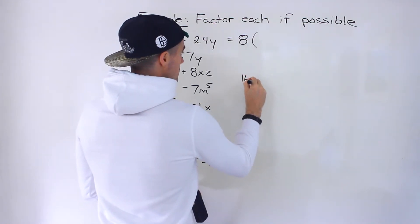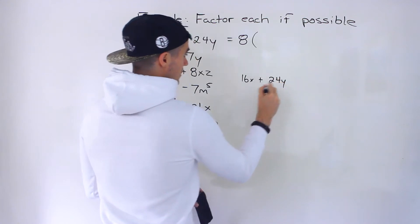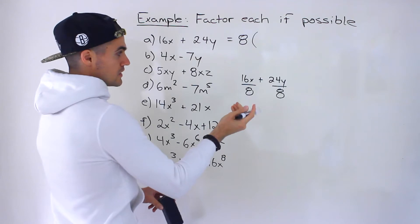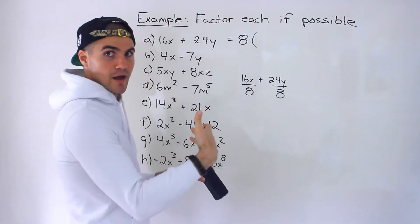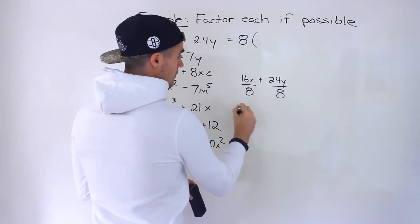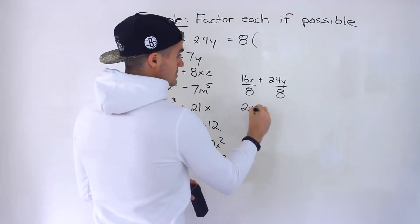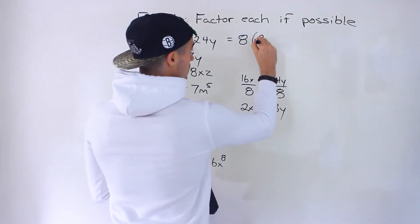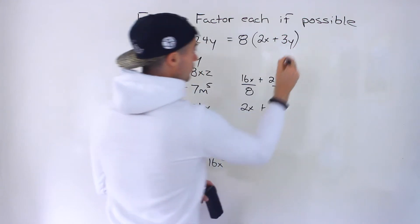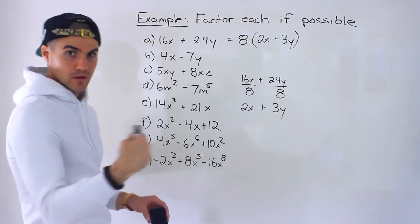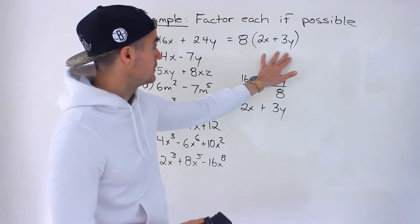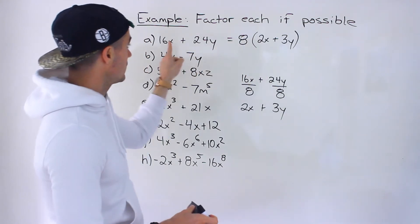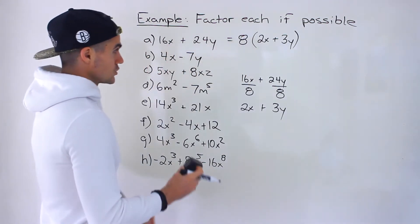What you can do is take the original expression and divide all of the parts by the greatest common factor you're taking out. 16x divided by 8 gives you 2x, and 24y divided by 8 gives you 3y. So we'd be left with 8(2x + 3y). To check your answer, you can expand it — factoring is the opposite of expanding — and make sure you get the original expression back.